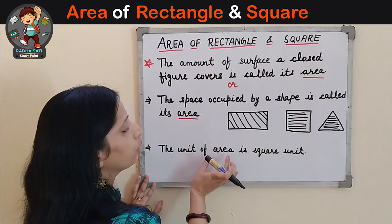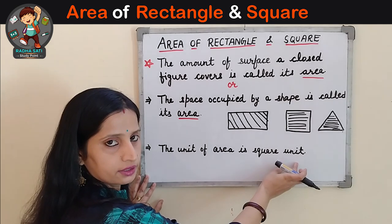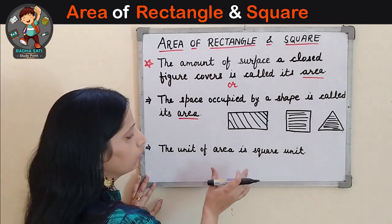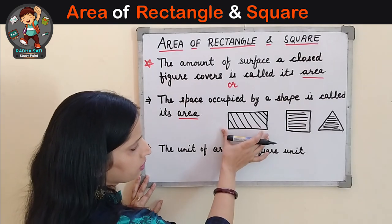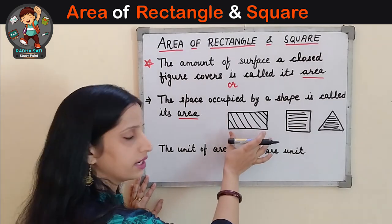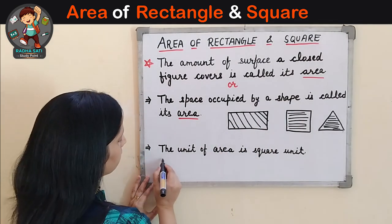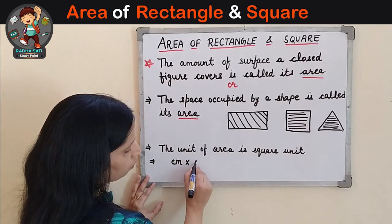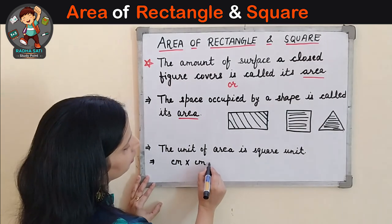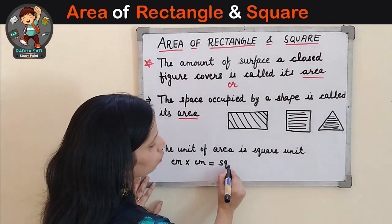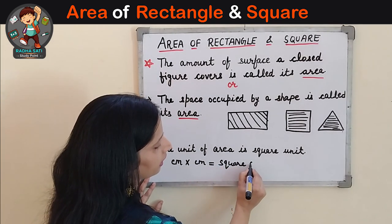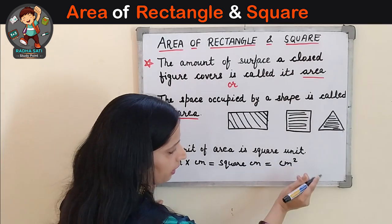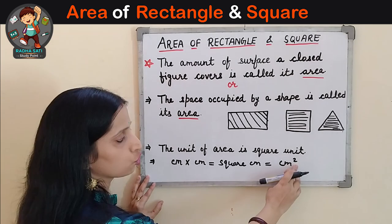Now the unit of area is always square unit. We always measure the area in square unit. For example, if the dimensions of a rectangle are given in centimetre, then its area will be centimetre multiplied by centimetre, and we will get square centimetre, or we can write it as centimetre squared as a superscript.